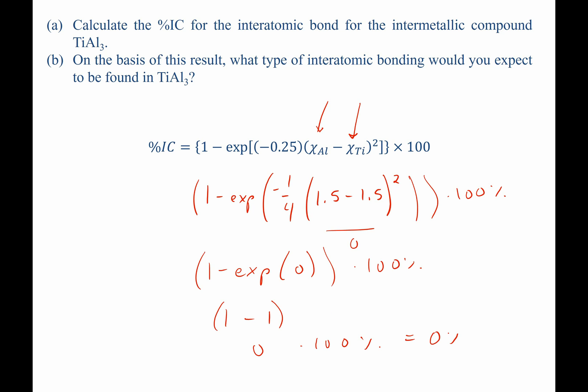This means that we have no percent ionic character in this bond. Since we're talking about two metals and we have no ionic character, we can predict that this will be completely metallic bonding.